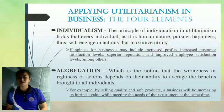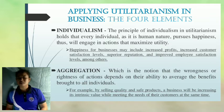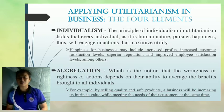The third element that business needs to understand, as to how the principle of utility affects their operations, is individualism. The principle of individualism in Utilitarianism holds that every individual, as it is human nature, pursues happiness, and will engage in actions that maximize stability. In this regard, businesses will take actions that bring them happiness. Happiness for business may include increased profits, increased possible satisfaction levels, superior reputations, and improved and strong satisfaction levels. By ensuring their employees are satisfied and happy at a personal standard, the business will also be putting themselves on the path for success.